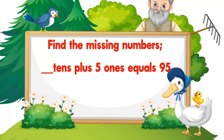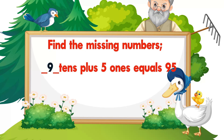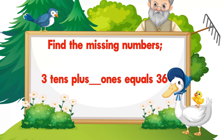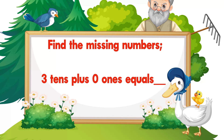Find the missing numbers. _ tens plus 5 ones equals 95. Correct — 9 is the correct answer. 3 tens plus _ ones equals 36. Correct — 6 is the correct answer. 3 tens plus 0 ones equals _. Correct — 30 is the correct answer.